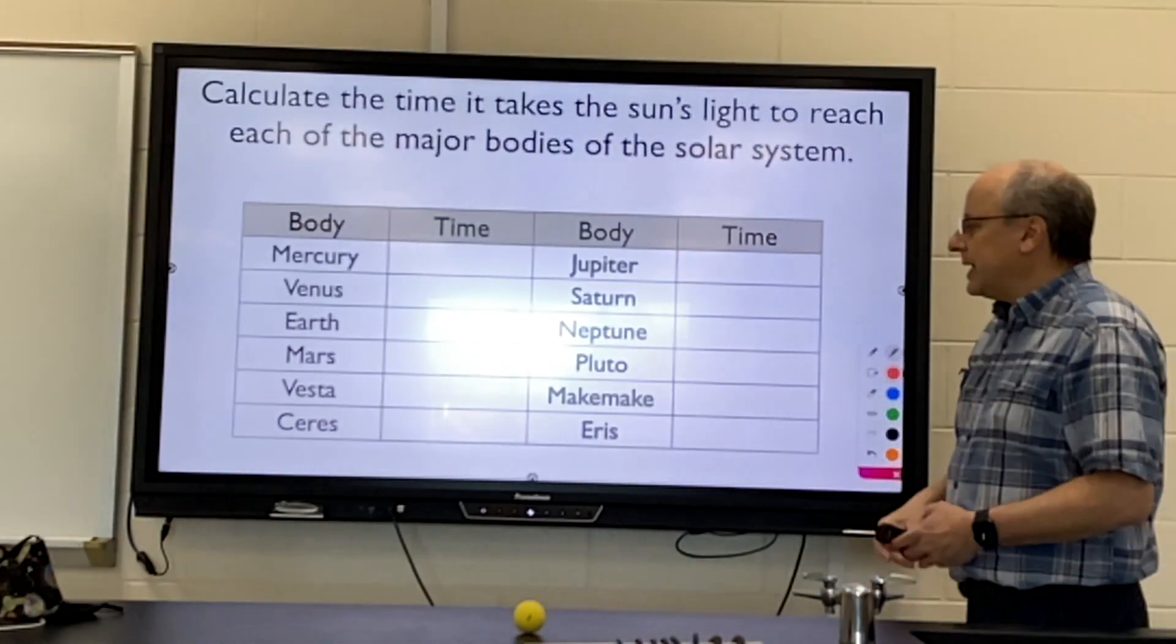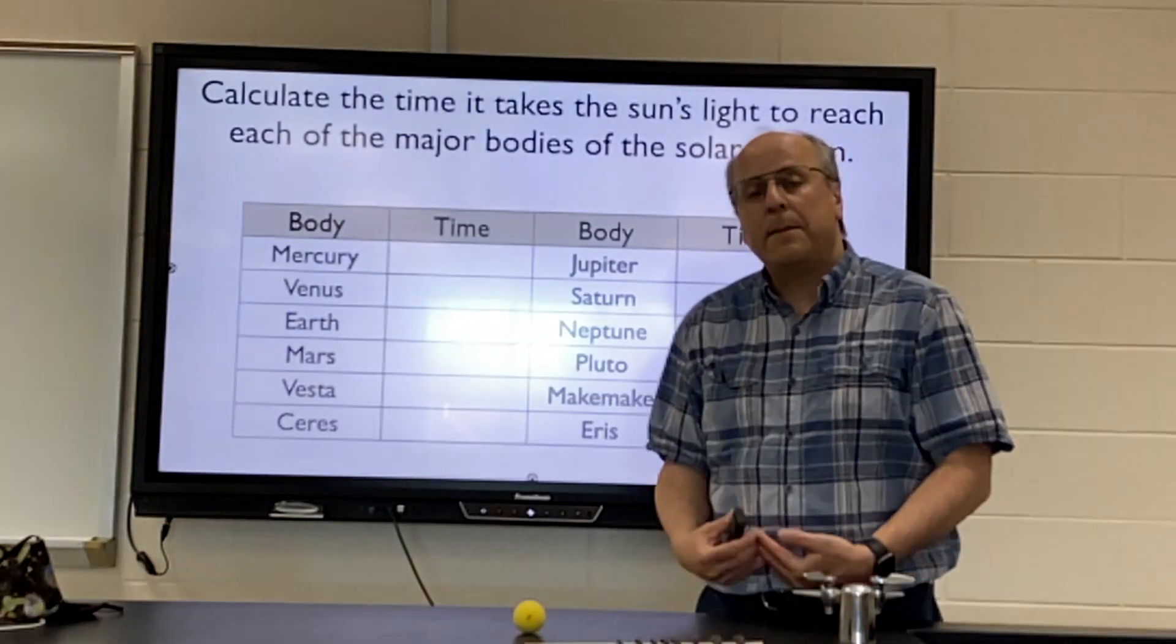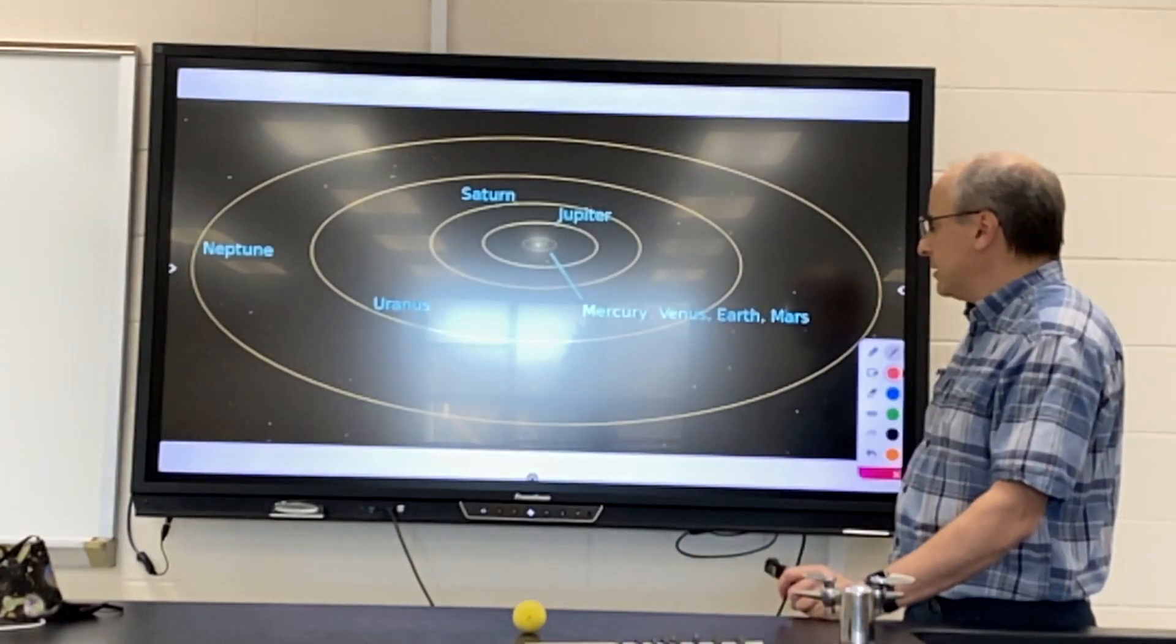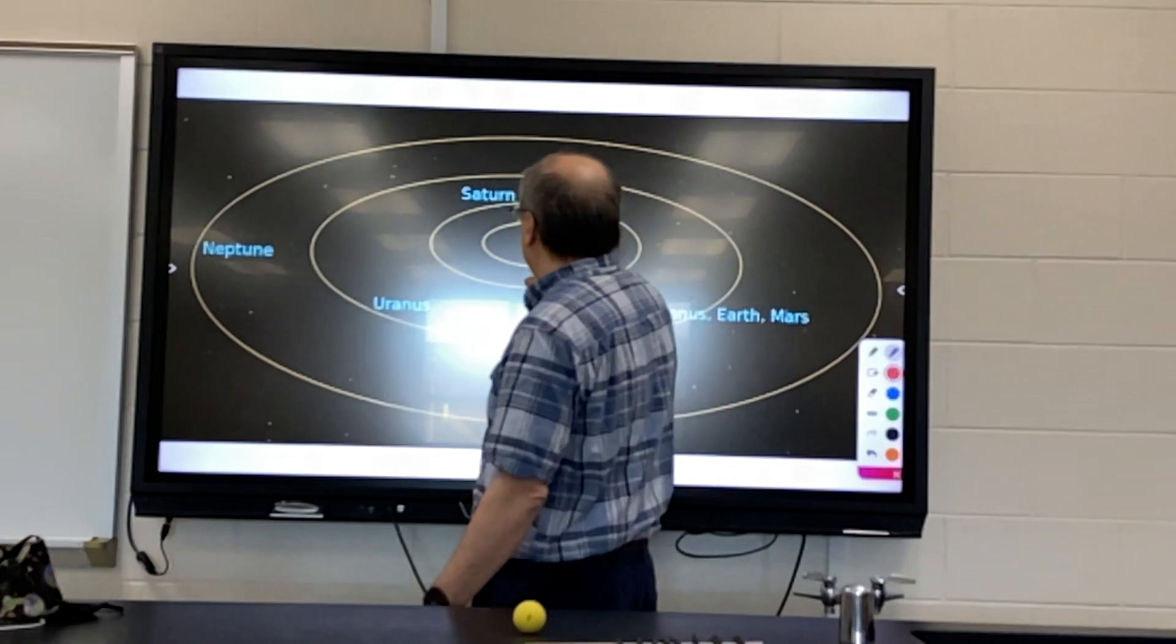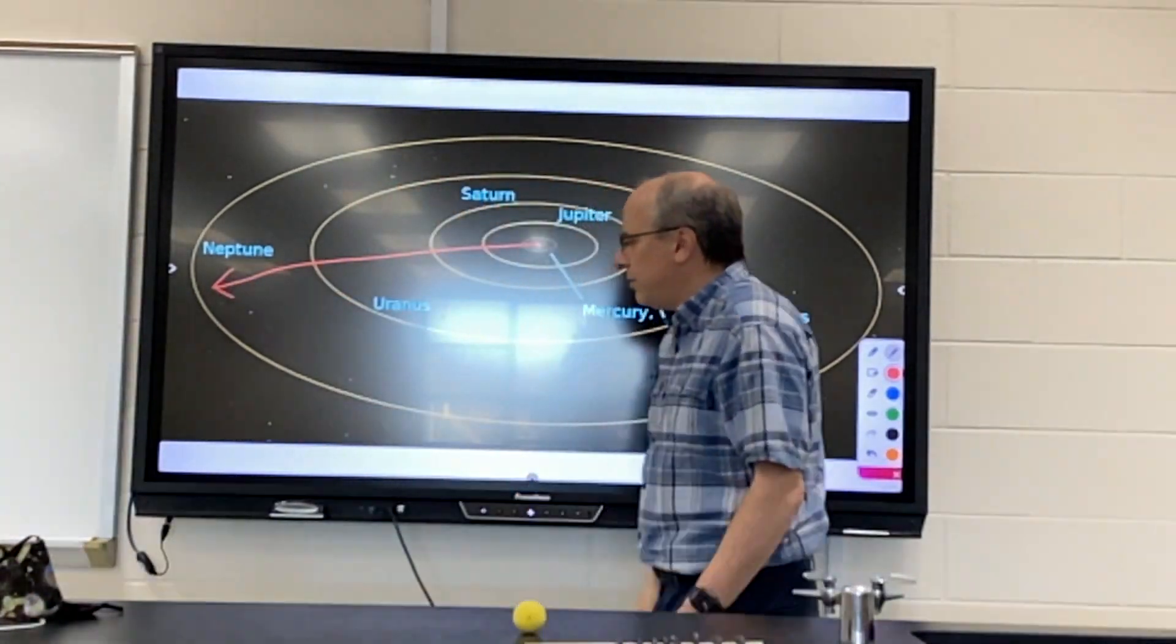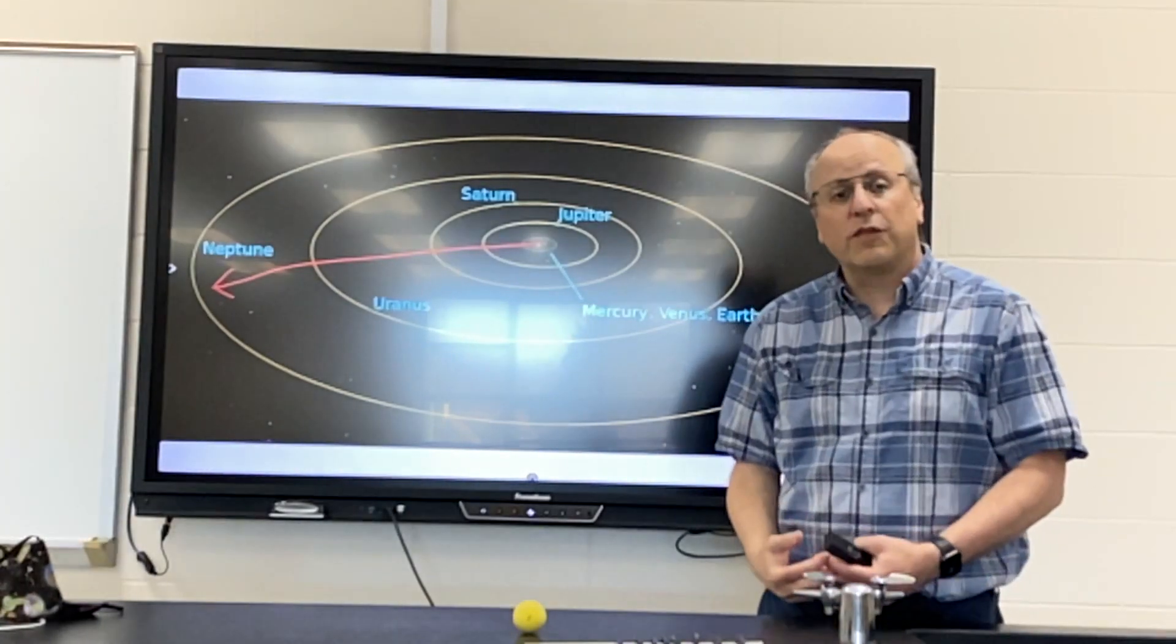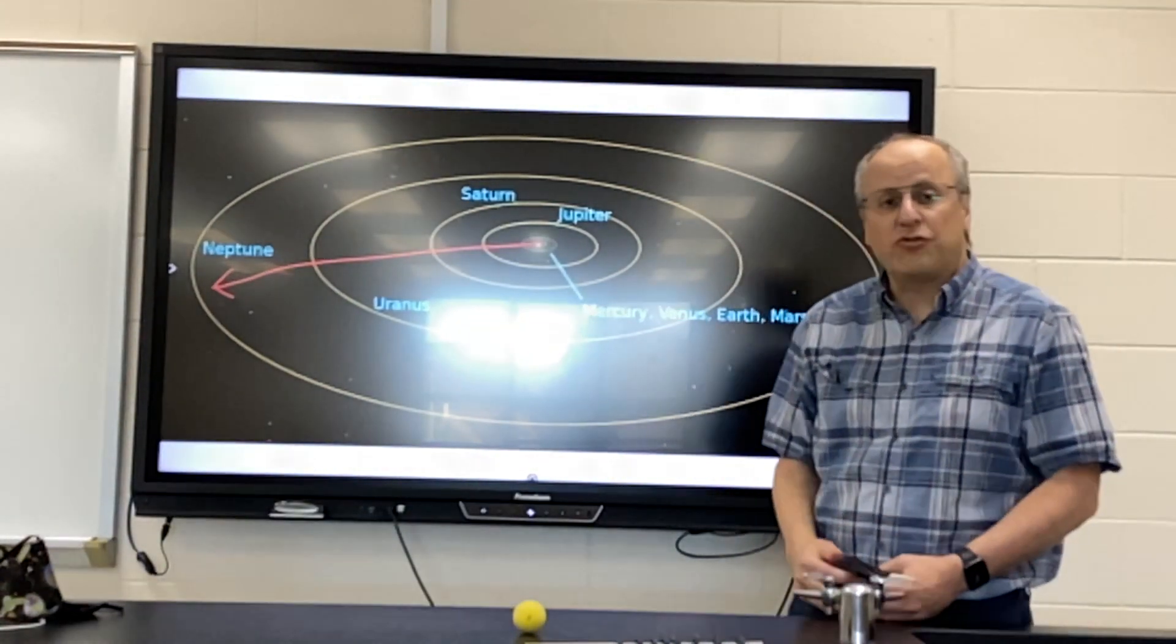I'd like you to get a sense of how big our solar system is based on how long it takes light to travel from different places. We would like to think that the light instantaneously reaches Neptune or the other bodies, but you will see it does require a significant travel time.